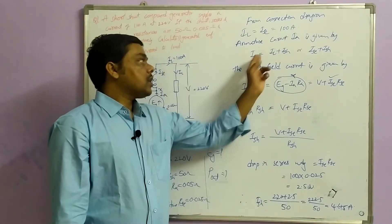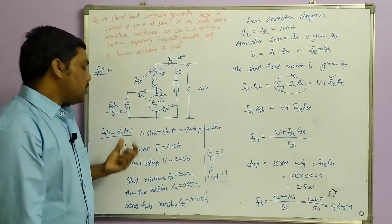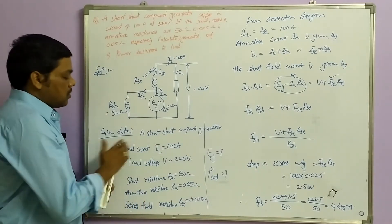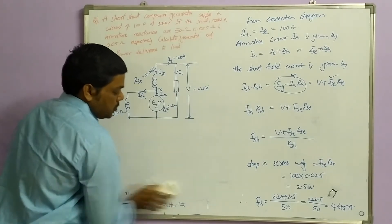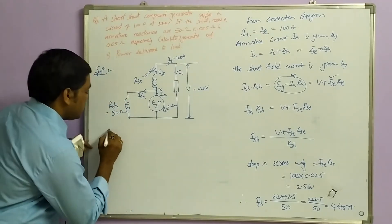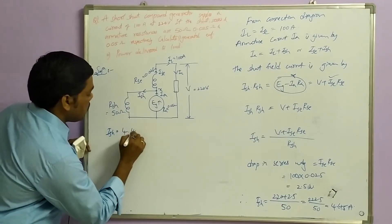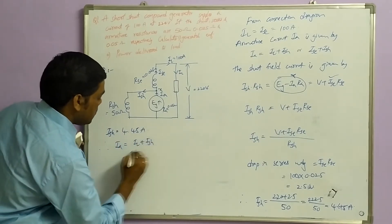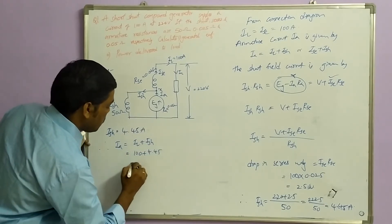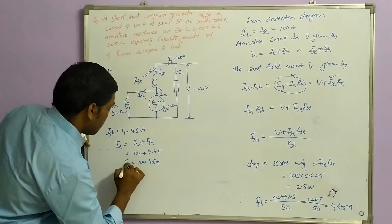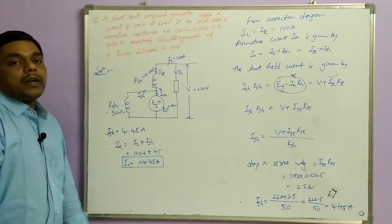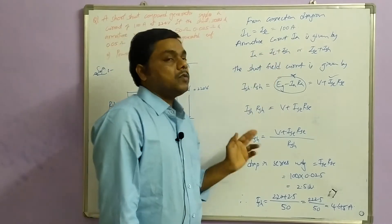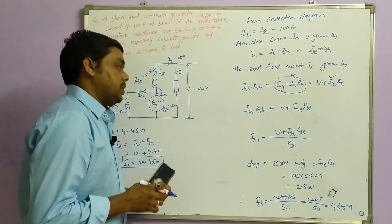Once the shunt current is calculated, we can determine the armature current. ISH = 4.45 amperes, therefore Ia = IL + ISH = 100 + 4.45 = 104.45 amperes. Now the armature current is calculated. Once we have the armature current, shunt current, and series and load currents, we can calculate the generated EMF and voltage.